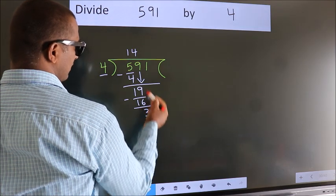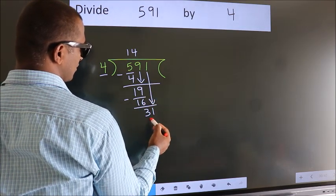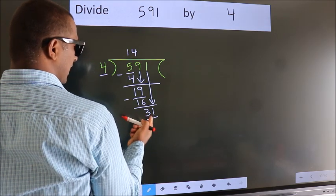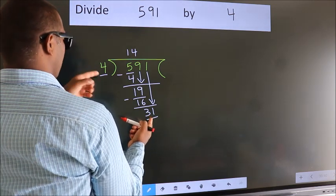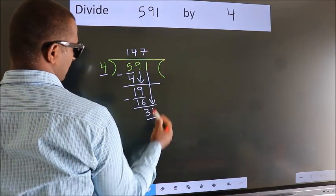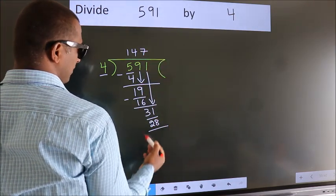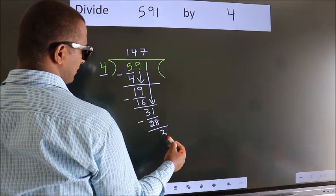After this, bring down the beside number. So 1 down. Now 31. A number close to 31 in the 4 table is 4 7s, 28. Now we subtract. We get 3.